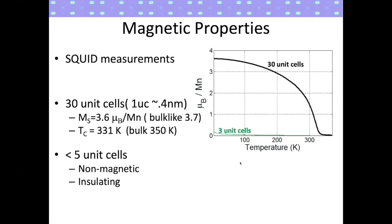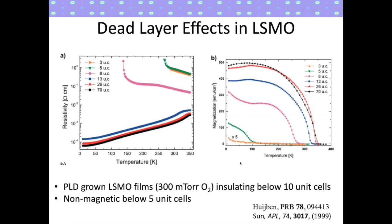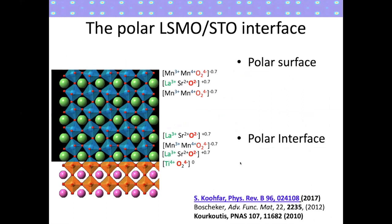We're not the first to find this — it has been known since the early 2000s and late 90s, where groups measured transport and magnetization as a function of thickness. For very thick films of 13 unit cells and thicker, these materials clearly have a metallic ground state and magnetic moments close to bulk values. But for films below 10 unit cells, such as 8 unit cells, you see an insulating ground state, and as thickness decreases, the resistivity goes up and the magnetization goes down.